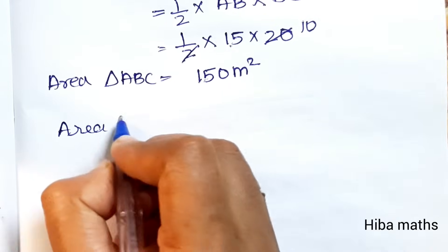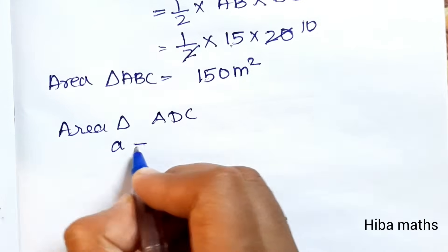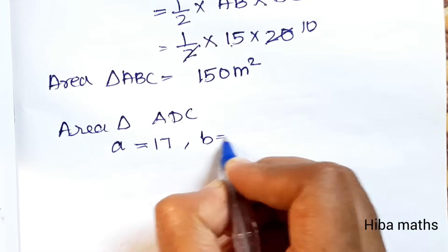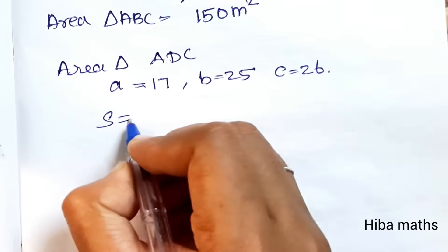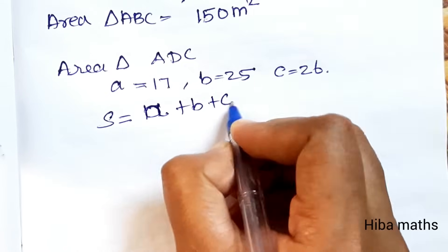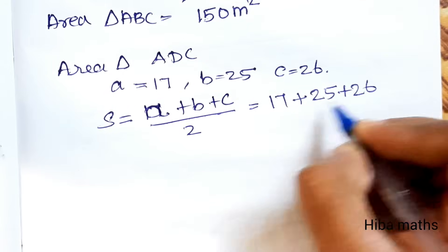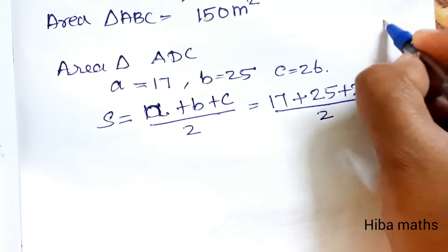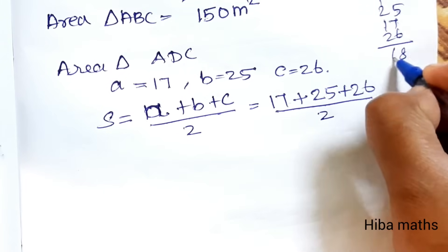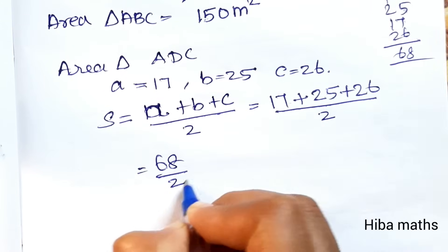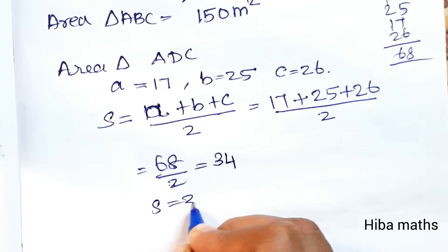Now for area of triangle ADC, we have three sides: a = AD = 17, b = AC = 25, c = CD = 26. Using Heron's formula, s = (a + b + c) / 2 = (17 + 25 + 26) / 2 = 68 / 2 = 34. So s = 34.